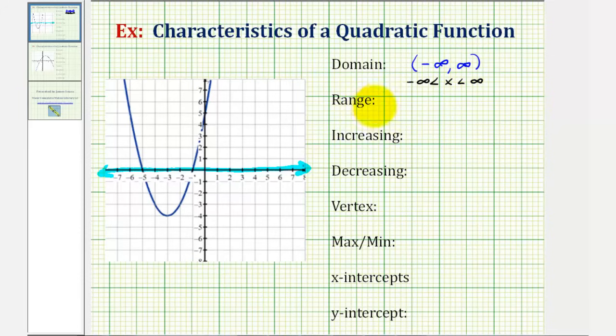The range is a set of all possible y values. Since the y values run along the vertical axis, we can think of projecting this onto the y-axis. Notice how the lowest point on this graph is at the vertex where the y value is negative four. And then from negative four, the y values increase without bound. Therefore, the range would be the interval from negative four to infinity, closed on negative four because it does include negative four.